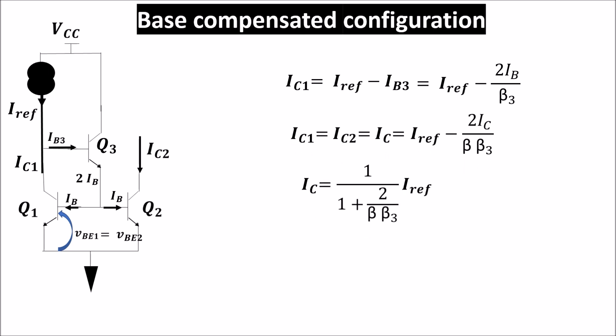Here we see now a factor of beta times beta 3, which improves the current transfer ratio, even if generally beta 3 is much less than beta. So with other branches, the relation becomes this. The output resistance of the configuration remains little r_o.